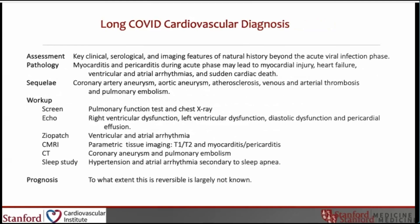In assessing the long COVID cardiovascular diagnosis, we look for key clinical, serological, and imaging features of the natural history beyond the acute viral infection phase. Pathologies were usually related to myocarditis and pericarditis during the acute phase, which may then lead to myocardial injury, heart failure, ventricular and atrial arrhythmia, and even sudden cardiac death. Sequelae were seen including coronary artery aneurysm, aortic aneurysm, atherosclerosis, venous and arterial thrombosis, and pulmonary embolism.